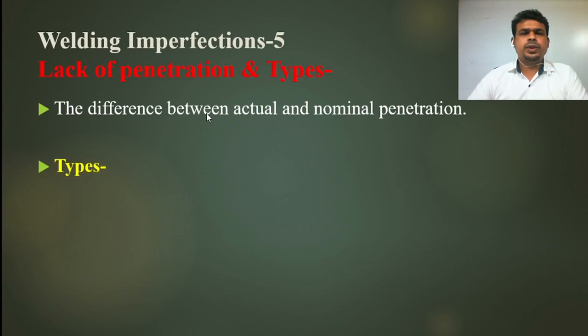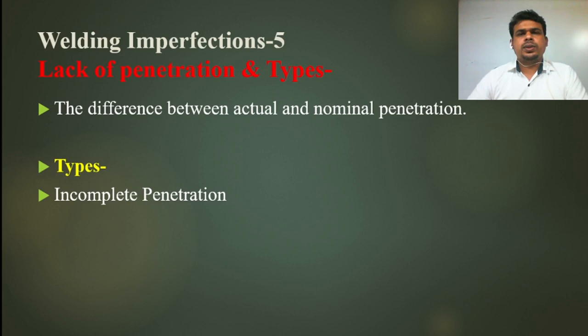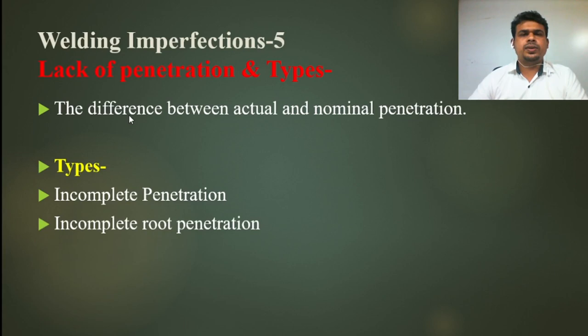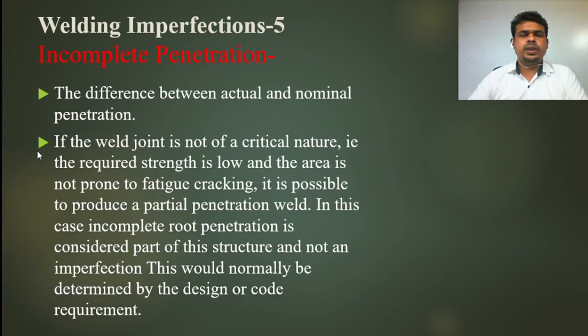Lack of penetration and its types — what is lack of penetration? It is the difference between actual and nominal penetration. The two types are incomplete penetration and incomplete root penetration. Incomplete penetration is the difference between actual and nominal penetration. If the weld joint is not of a critical nature — for example, the required strength is low and the area is not prone to fatigue cracking — it is possible to produce a partial penetration weld. In this case, incomplete penetration is considered part of the structure and not an imperfection, as determined by the design code.